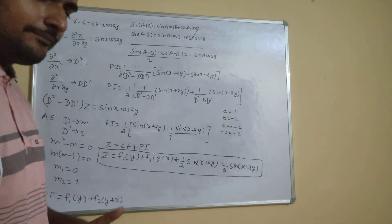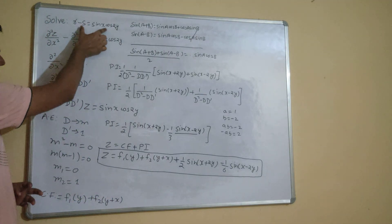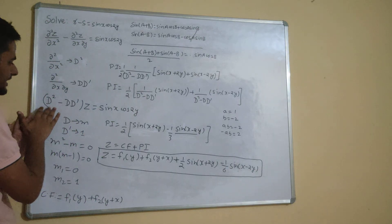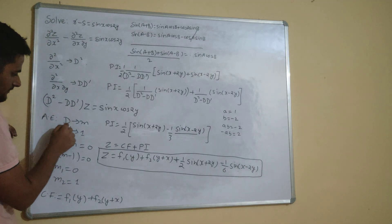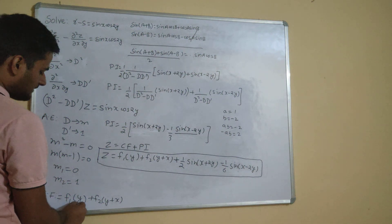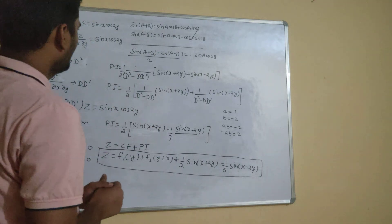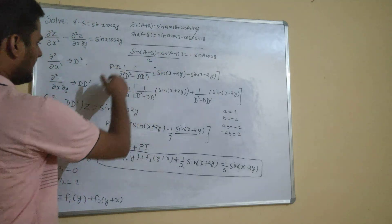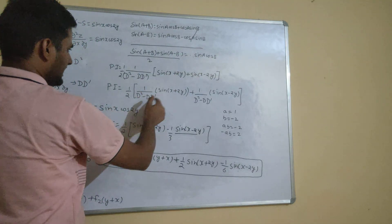The game is simple once you know the rules. When you see R and S, convert to D and D̄ operators using the substitutions. Come to the auxiliary equation: replace D by m and D̄ by 1, find values of m, write complementary function as f₁(y+m₁x) + f₂(y+m₂x). If roots repeat, multiply the second term by x.